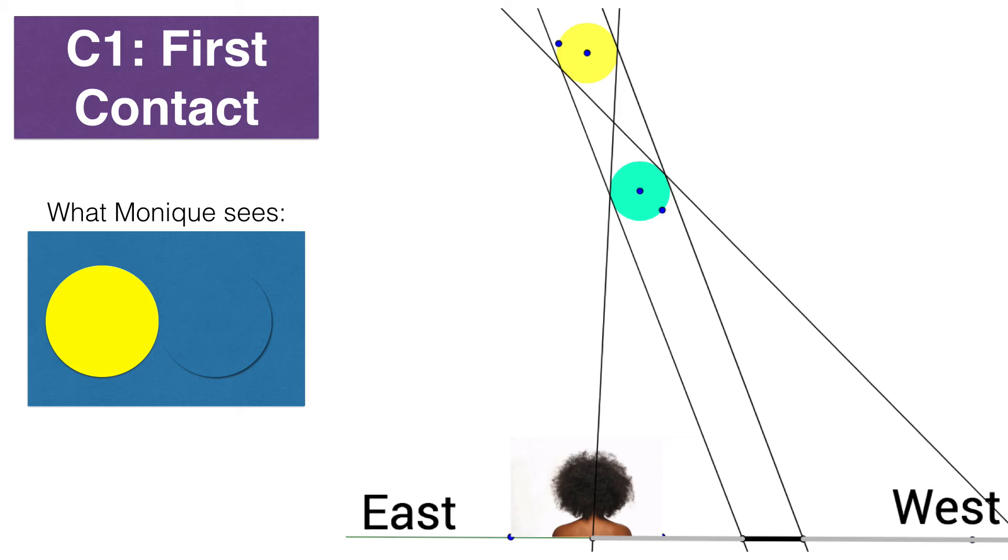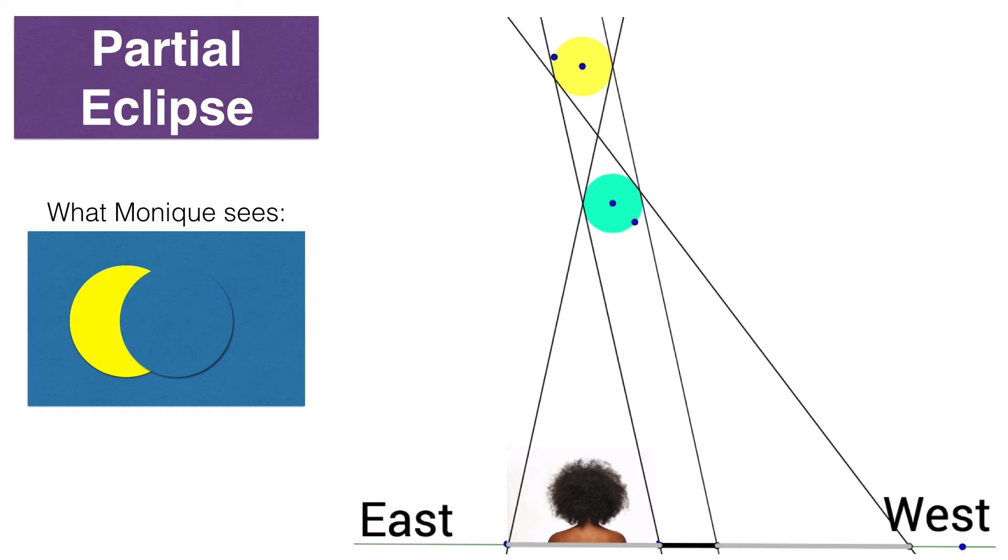Next we have this C1, which is first contact. And again, Monique is not going to see anything much different. She's going to see the sun, but this is the point where the moon just starts to touch the right side of the sun. Now, please notice where Monique is. She's now in the penumbral area, the area I shaded gray. And what will she see as she looks up left to right? She first sees the left side of the sun and then the right side of the sun is being obscured by the moon.